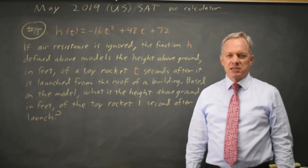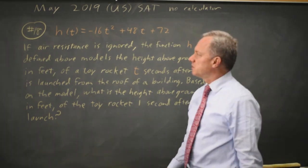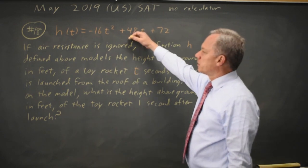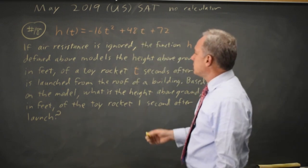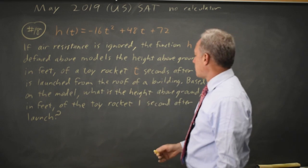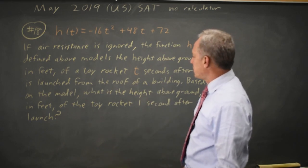This is non-calculator question number 18 from the May 2019 U.S. exam. College Board gives us a quadratic that models the height of a rocket T seconds after it's launched from the roof of a building, and the height is in feet.